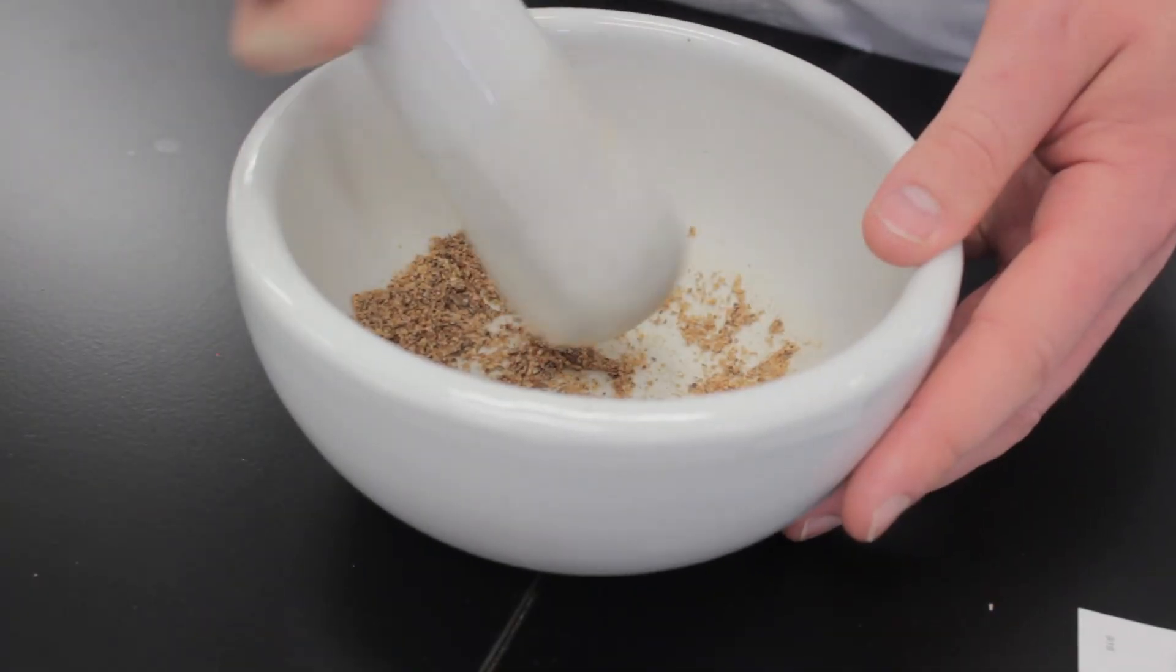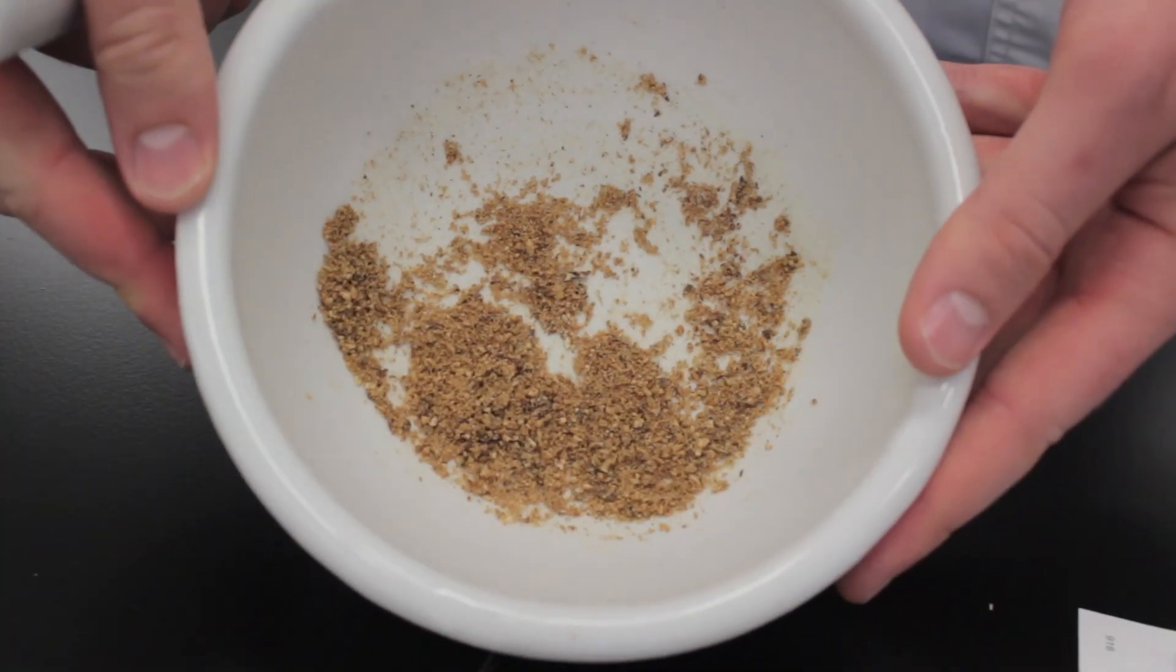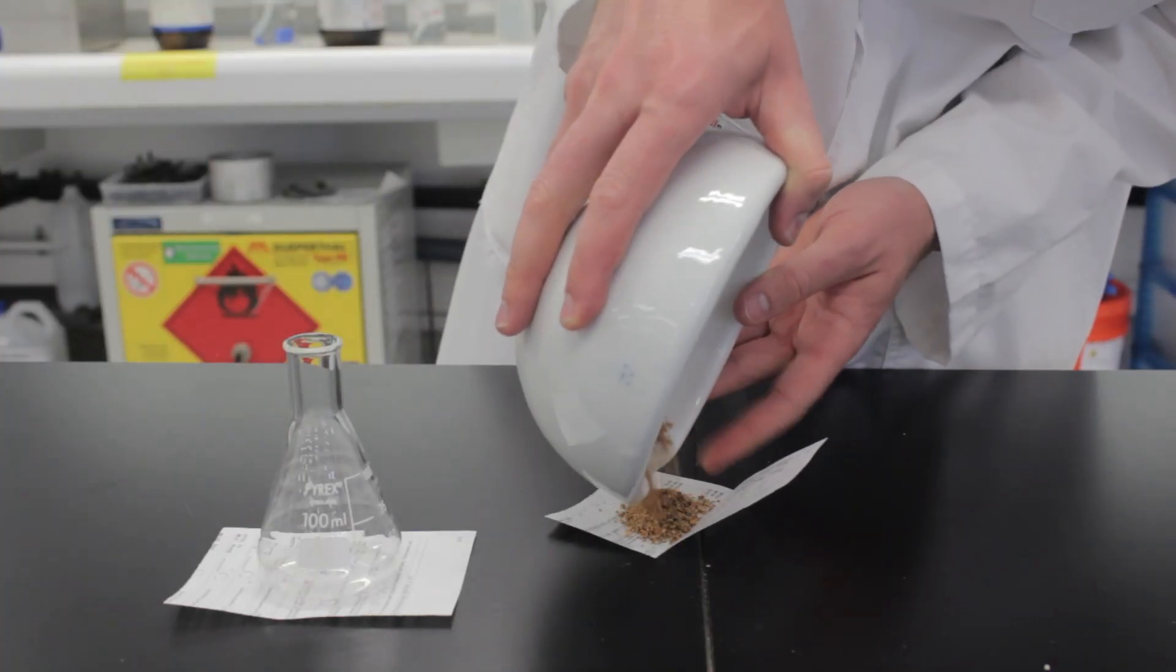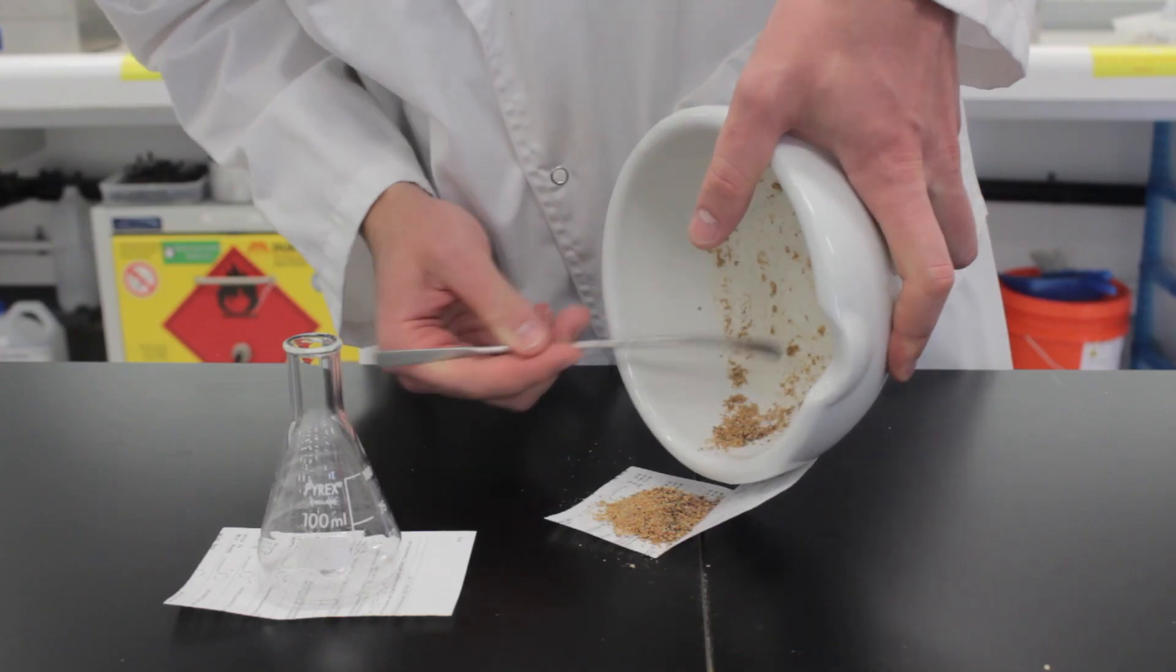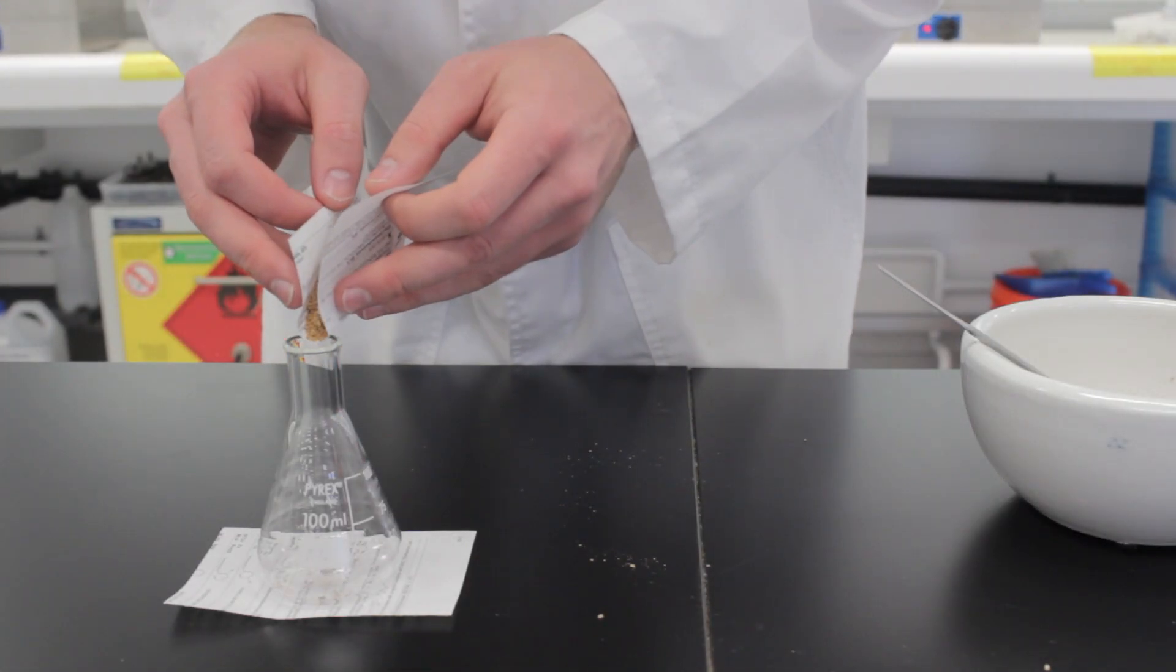Make sure there are no huge chunks then transfer your powder to a 100 ml conical flask. First tip it out onto a weighing paper using a spatula to scrape off anything that's stuck on the mortar. Then fold it into a cone and transfer it into your flask.